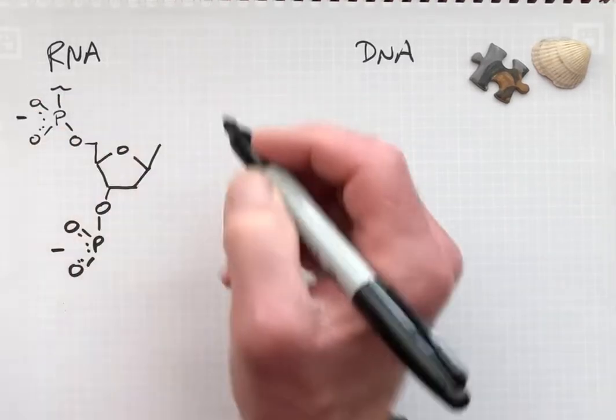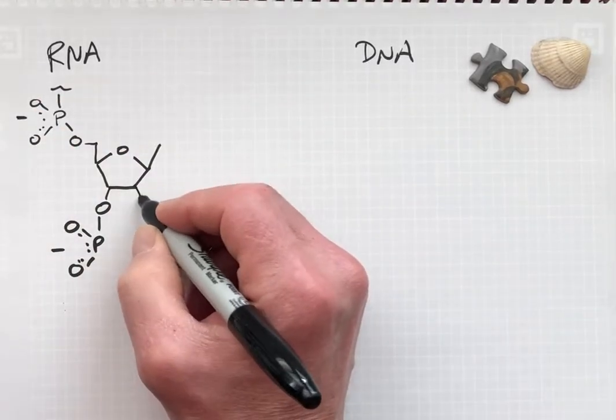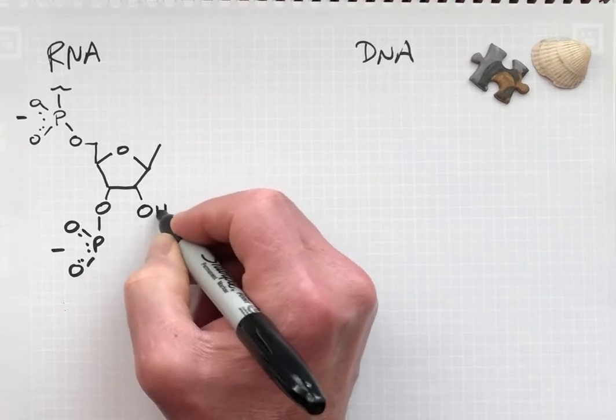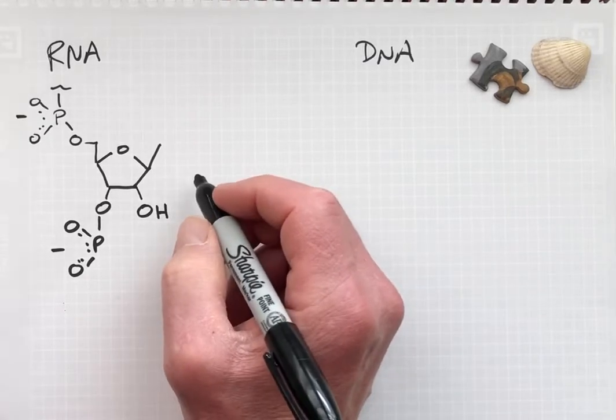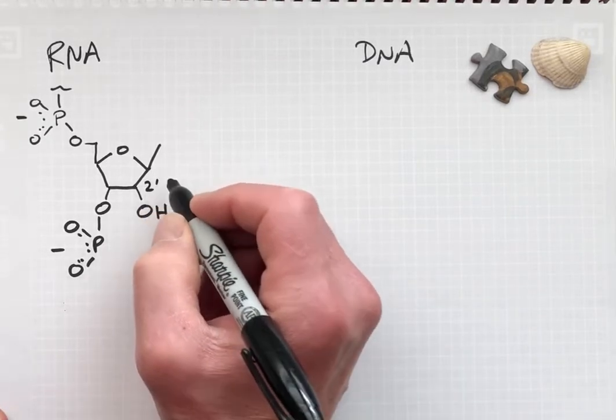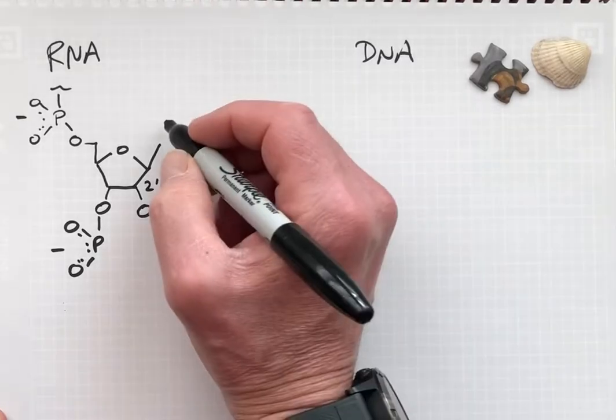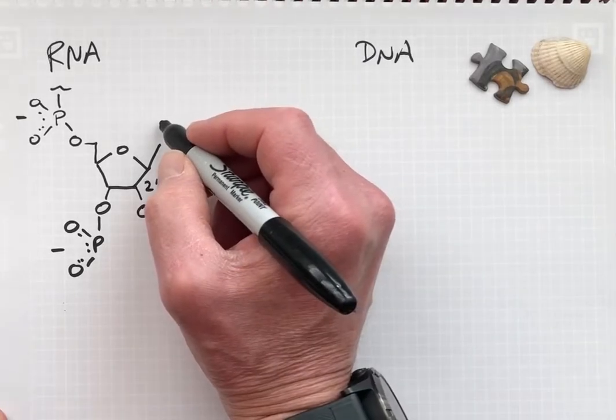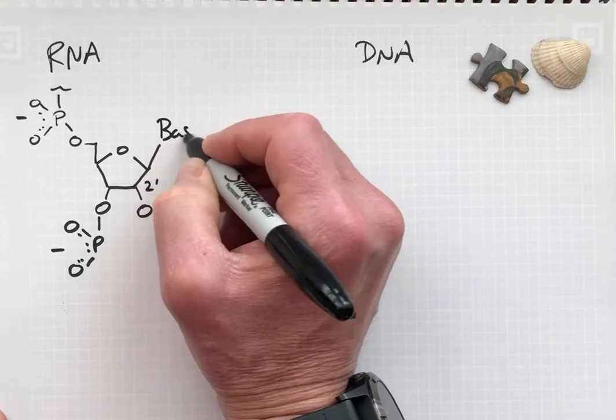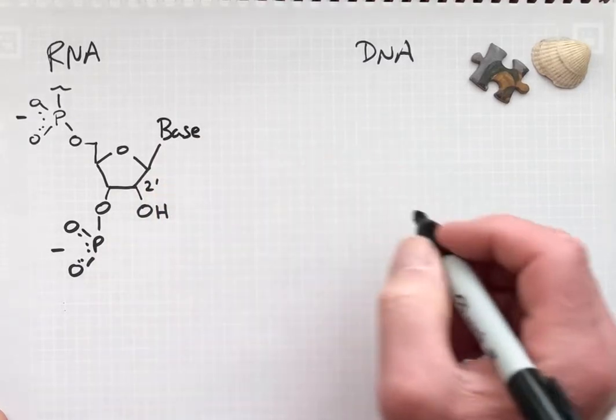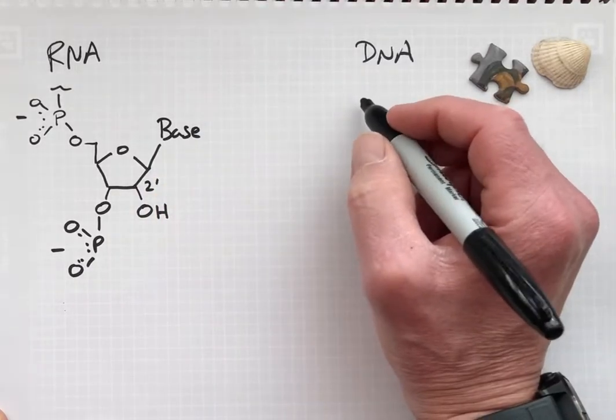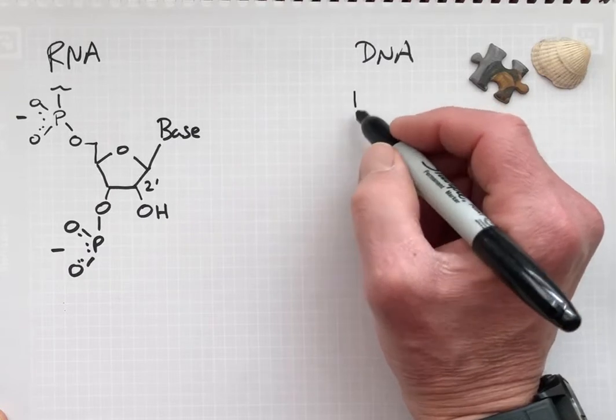There's negative charges here and here. We have a two prime hydroxyl group in RNA that is not present in DNA, and then the bases for RNA are somewhat different than the ones in DNA.